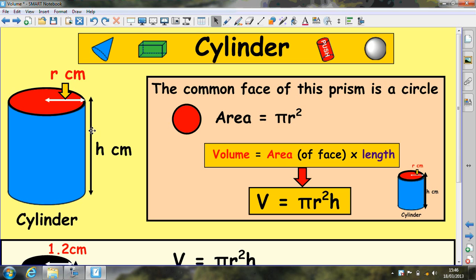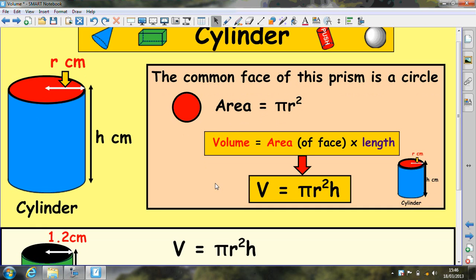So if we get the area of the face, which is pi r squared, and times it by the height, you get this formula. So moving on to try and use it.